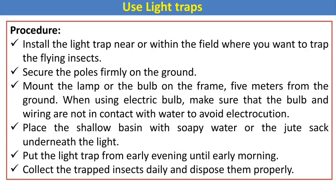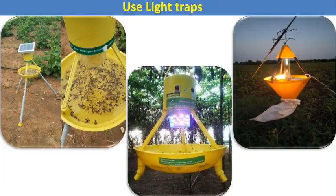The actual procedure for installation of the light trap: install it near or within the fields where you want to trap flying insects. Secure the poles firmly on the ground. Mount the lamp or bulb on the frame, 5 meters from the ground. When using an electric bulb, make sure the bulb and wiring are not in contact with water to avoid electrocution. Place a shallow basin with soapy water or a jute sack underneath the light. Run the light trap from early evening until early morning, and collect the trapped insects daily and dispose of them properly.